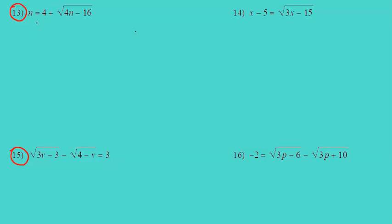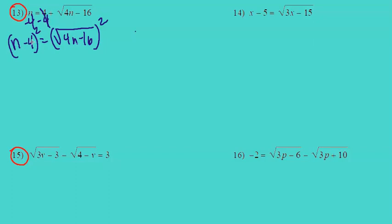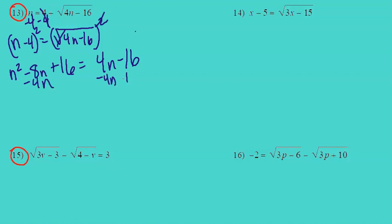Number 13: n equals 4 plus the square root of 4n minus 16. The first thing we want to do is isolate the square root by subtracting 4 from each side, giving n minus 4 equals the square root of 4n minus 16. To get rid of the square root, square each side. Using FOIL, n minus 4 squared gives n squared minus 8n plus 16, and that equals 4n minus 16. Move everything to one side: subtract 4n from each side and add 16 to each side.